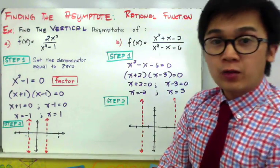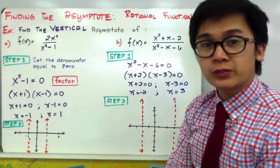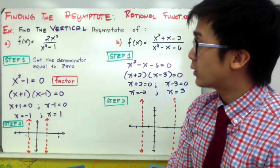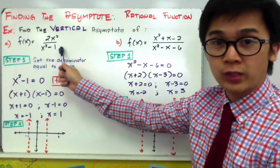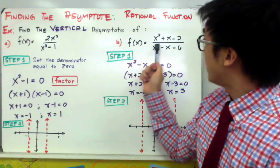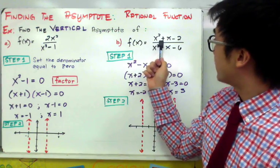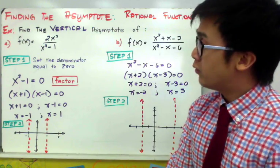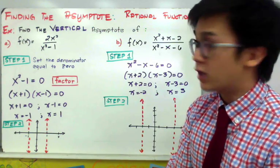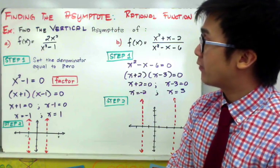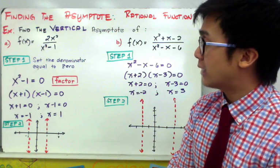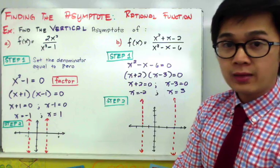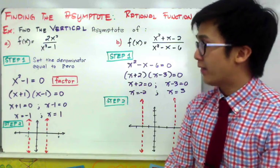For our first two examples, we're going to find the vertical asymptotes of f(x) = 2x² / (x² - 1) and (x² + x - 2) / (x² - x - 6), both of which are rational functions. The first step in finding the vertical asymptote is setting the denominator to 0 and then solving for the x value.